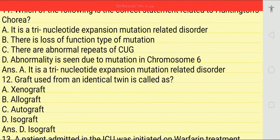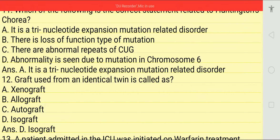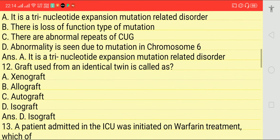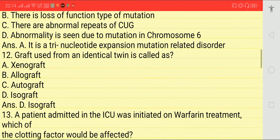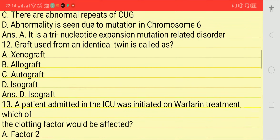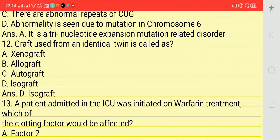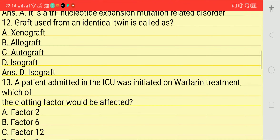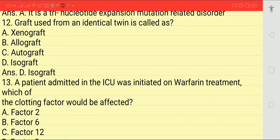Which of the following is the correct statement related to myotonic dystrophy? Options: it is a trinucleotide expansion mutation related disorder; there is loss of function mutation; there are abnormal repeats of CUG; or it is due to mutation in chromosome 6. Answer is A — it is a trinucleotide expansion mutation related disorder.